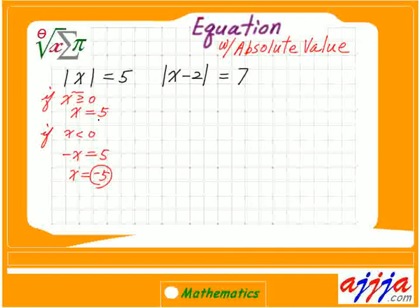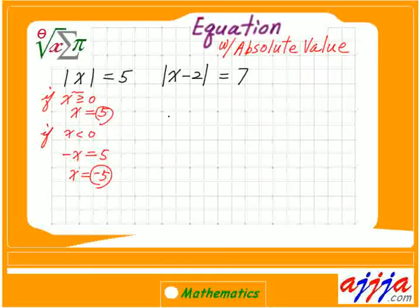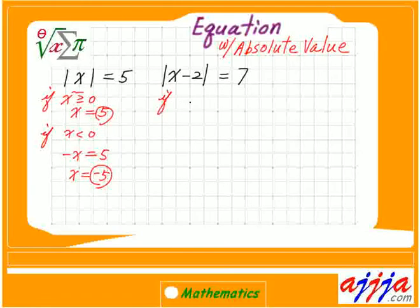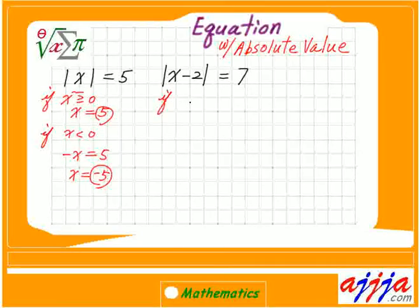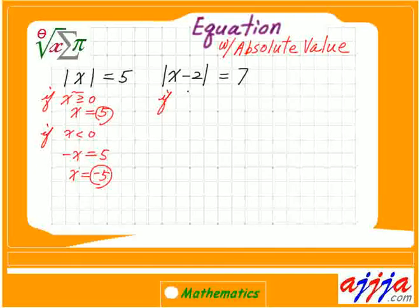That's why the answer can be positive 5 or negative 5. Let's try this one. Always, when you have absolute value with some variables inside, you have to treat this one twice.